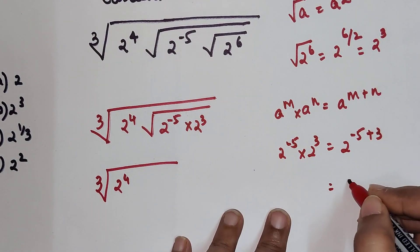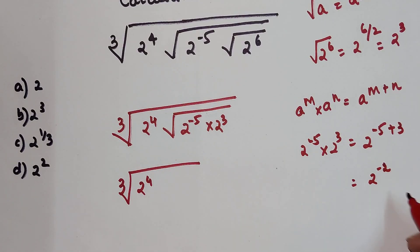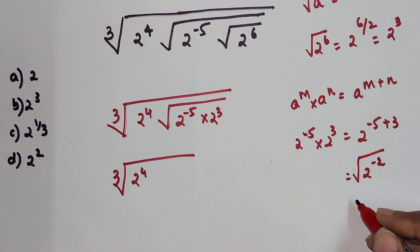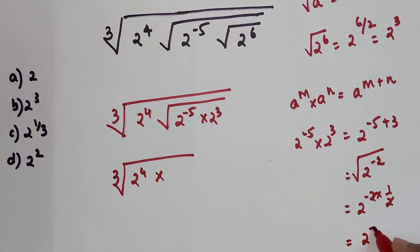So this is coming out to be 2 raise to minus 2. So here now this is still under a square root. So this square root is nothing but 2 raise to minus 2 into 1 upon 2. So this is cancelling, so we are just left with 2 raise to minus 1.